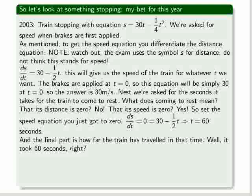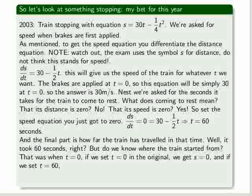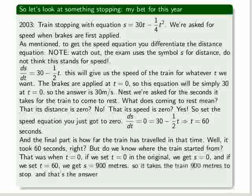And the final part is how far the train travelled in that time. Well it took 60 seconds during its travelling, right? But do we know where the train started from? That was when t equals zero. So if we set t equals to zero in the original equation, which was 30t minus 1 quarter t squared, we get s equals to zero. And if we set t equal to 60, we get s equal to 900 meters. So it takes the train 900 meters to stop. And that's the answer. Thanks for watching and good luck in the exams.